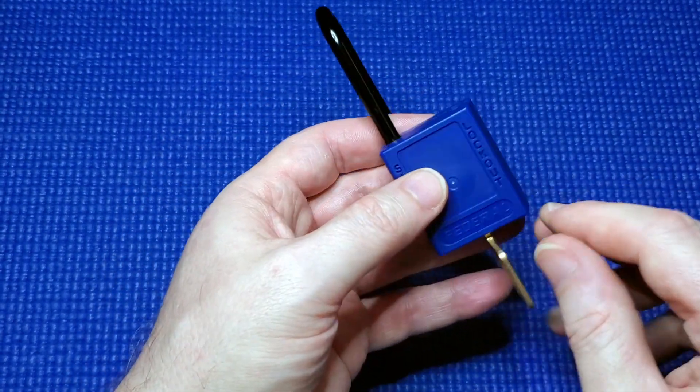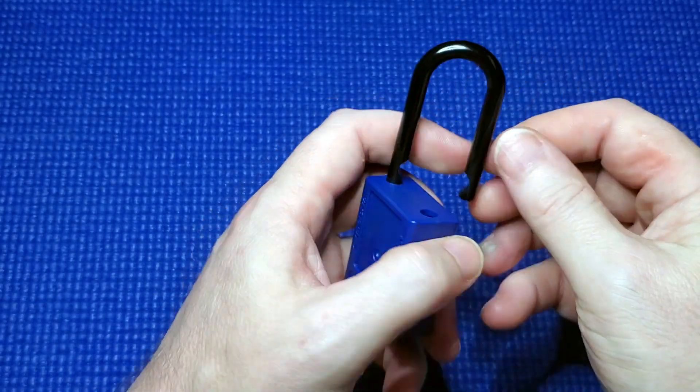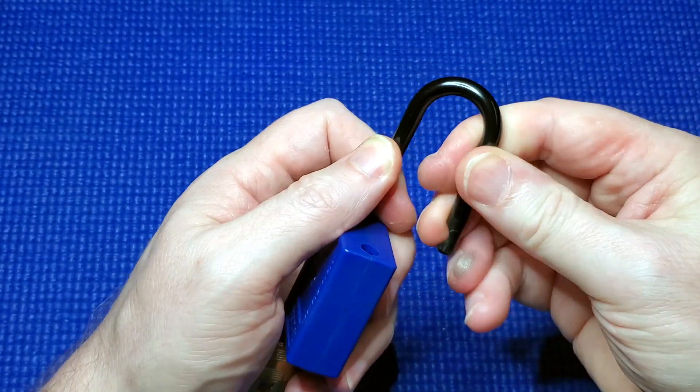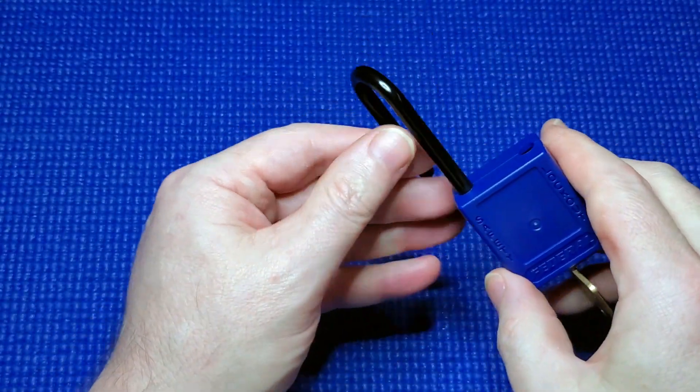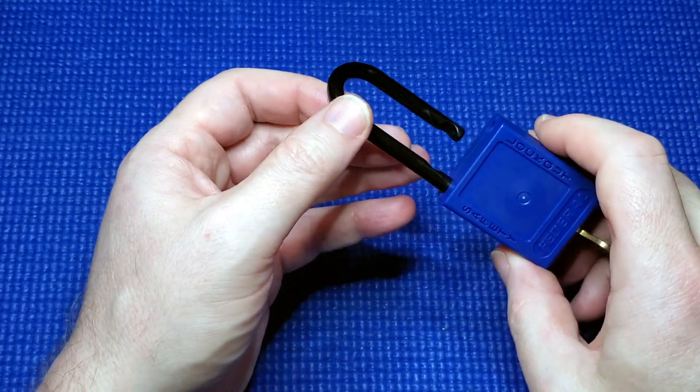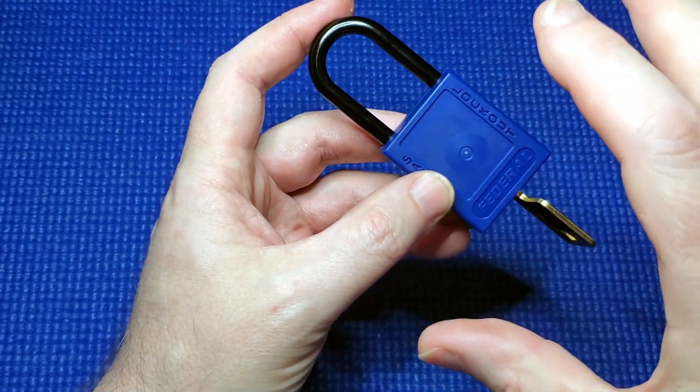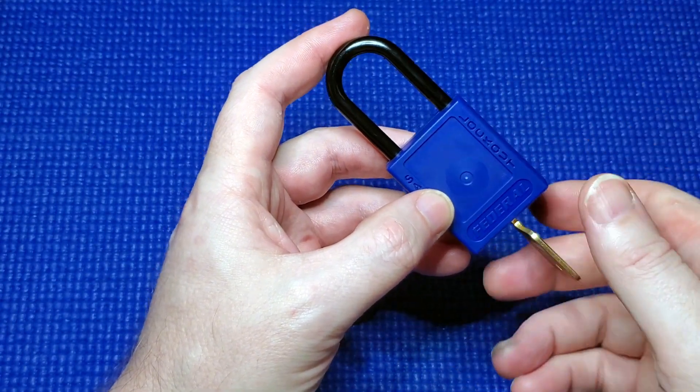You might be saying, this is just a plastic lock, plastic body, plastic nylon shackle. But actually, this isn't used for security where you don't want someone to come and chop it off. This is used as a warning that the machine's been locked out, and no one can operate it.